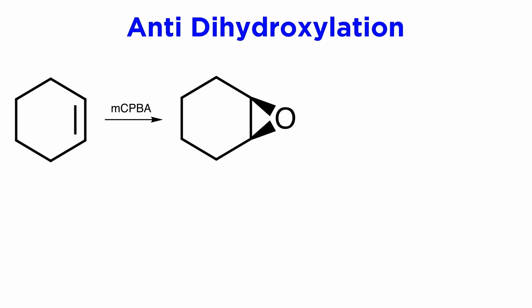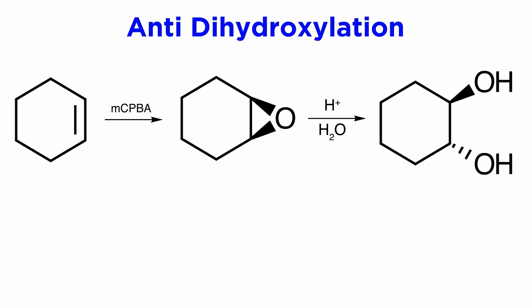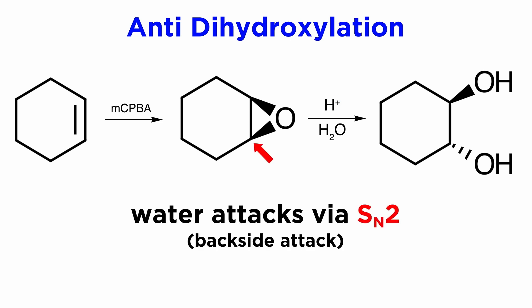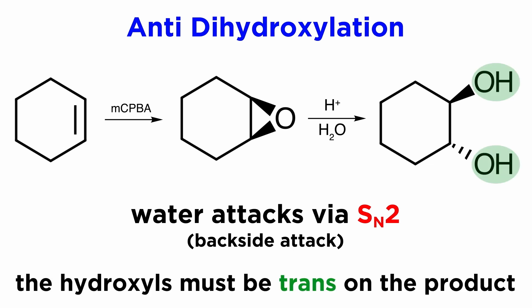Epoxide formation is a key transformation, because from epoxides we can do a number of different things. First, epoxides offer a way to achieve anti-dihydroxylation if we open up an epoxide with water, typically in acidic conditions. The way this works is that the oxygen is protonated by the acid, and then water attacks one of the carbons in the epoxide to pop open the ring via SN2, which must proceed via a backside attack, which means that on a cyclic reagent, once the water that attacked is deprotonated, the resulting hydroxyls must be trans to one another.